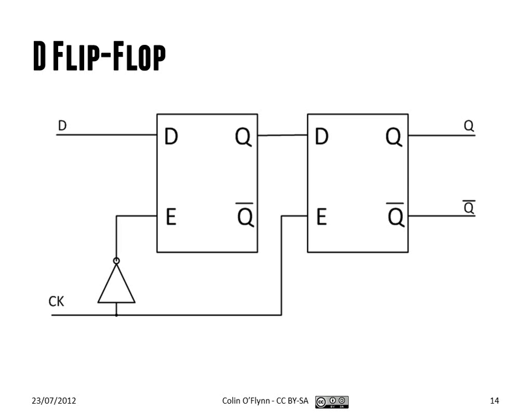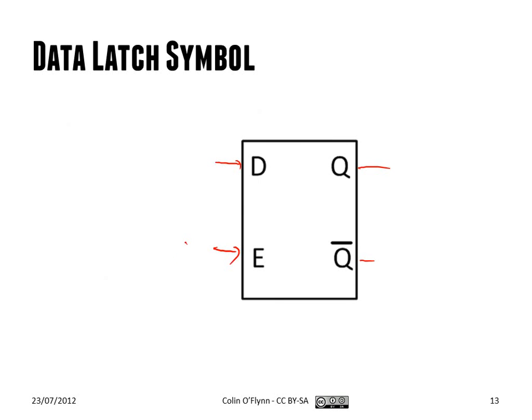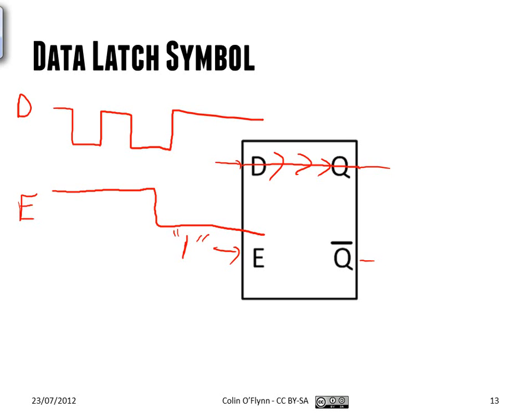So what we'll use more is what we call flip-flops. So latches, as long as this enable input was one, the output, you can think of it, gets connected to the input. So it's just continuously forwarding. So if you had something like the D line is this, and the enable line was this, and say I'll go low there, what you'd have at Q is it would follow D as long as enable is high. When enable goes low, it's just going to save that last value.